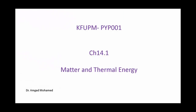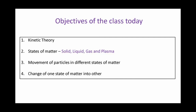This is the first chapter in the chemistry part after we have finished the physics part. That's chapter 14, section 1: matter and thermal energy. In this section you will know how the kinetic theory describes matter, what are the states of matter — solid, liquid, gas, and plasma — the movement of particles in different states, how to change from one state to the other, and what are the requirements for this change.